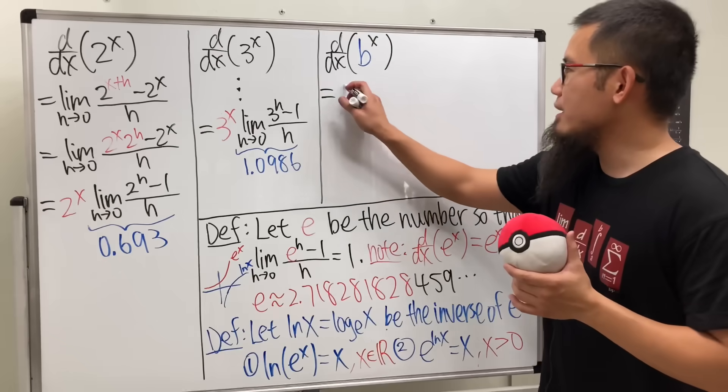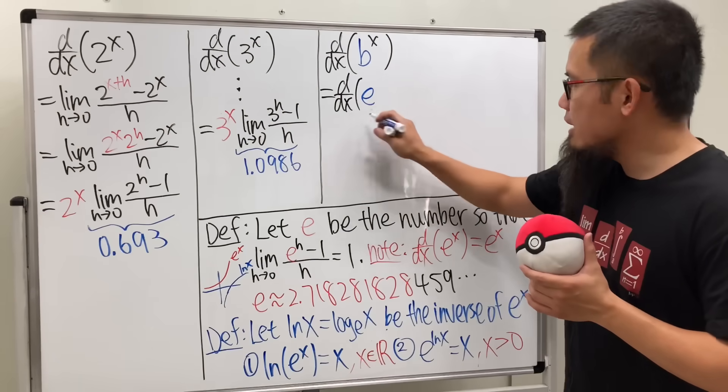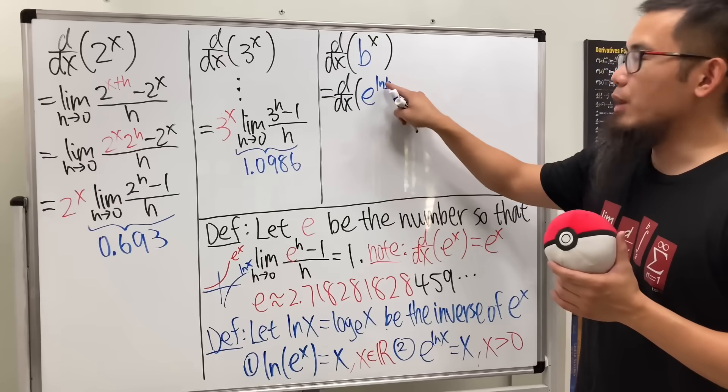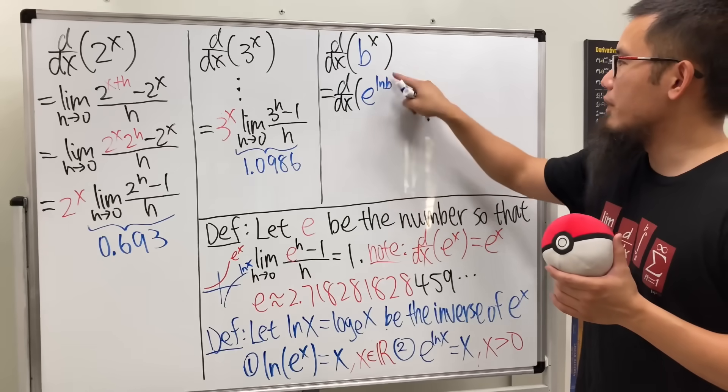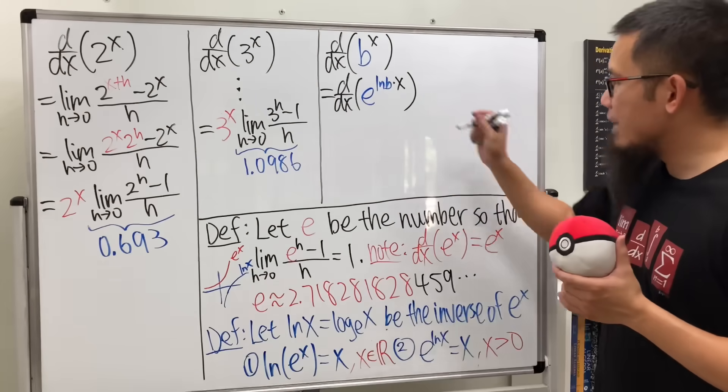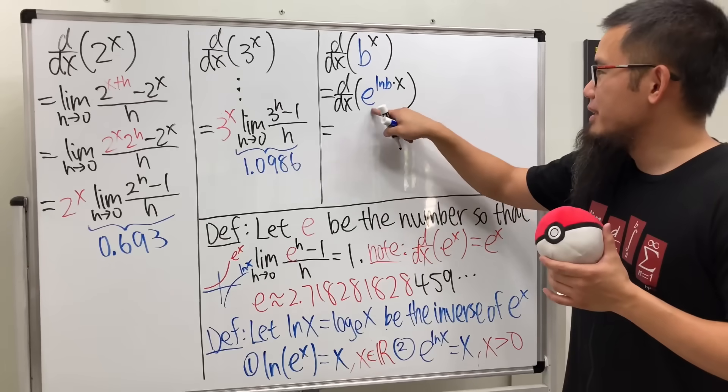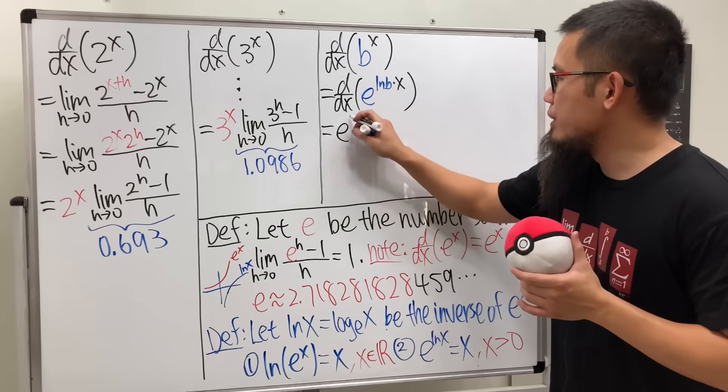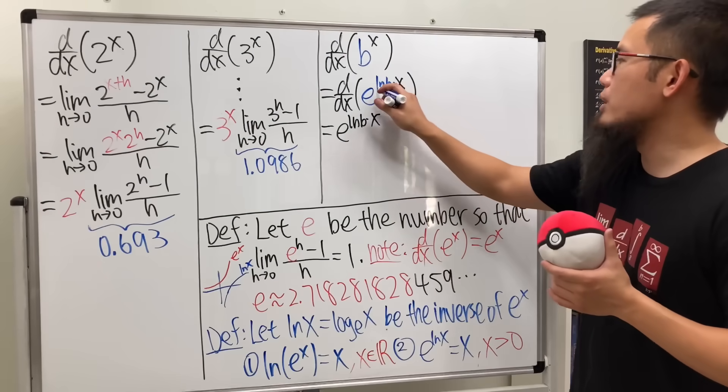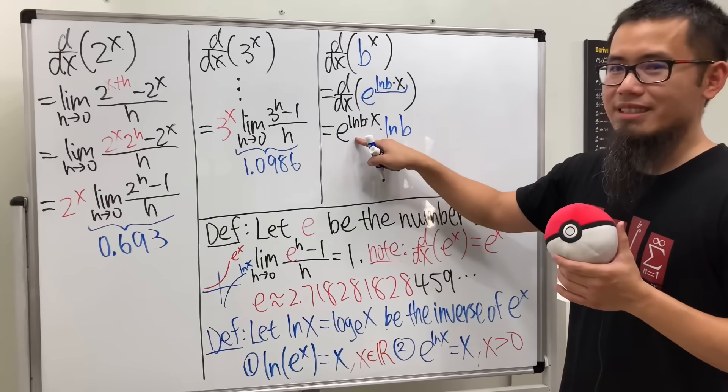So this is the same as differentiating, look at b as e to the ln b power. Because this and that, that will give us the b back. And don't forget, we still have this raised to the x power. So let's multiply the x right here. And then have a look. When we differentiate this function, of course, we can also use the chain rule. So this repeats e to the ln b times x. And then we multiply by, thanks to the chain rule, multiply by the derivative right here, which is going to be ln b.